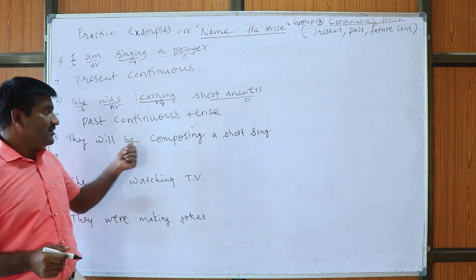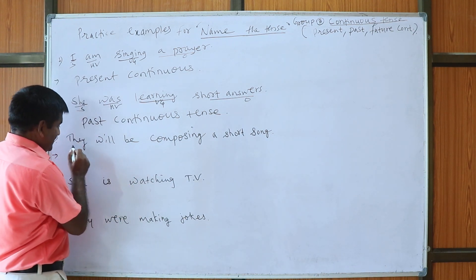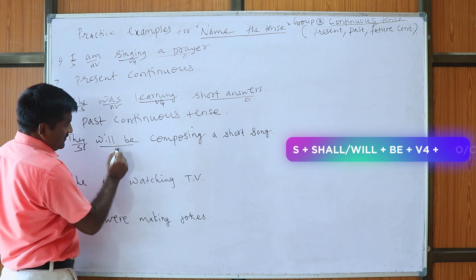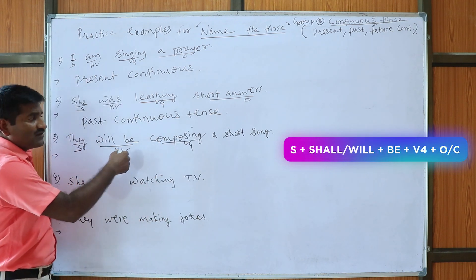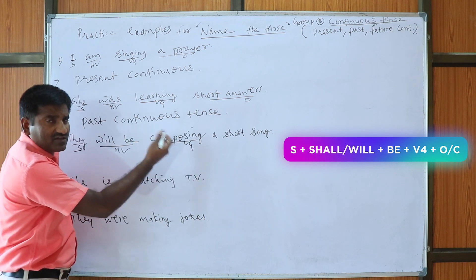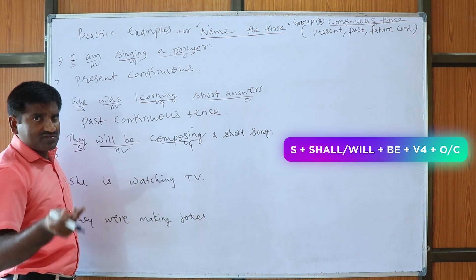Now third one, they will be composing a short song, so here they is called as subject, this will be helping verb and composing is V4, so shall be/will be plus V4, shall be/will be plus V4, it's a formula of future continuous tense.